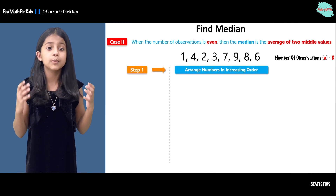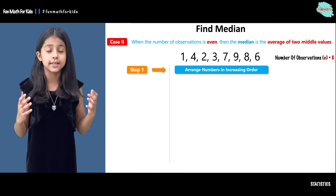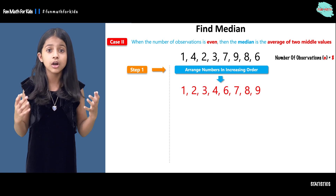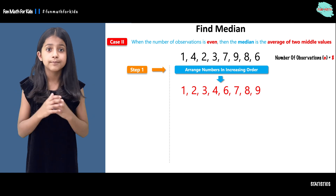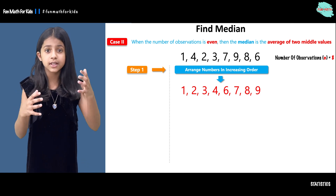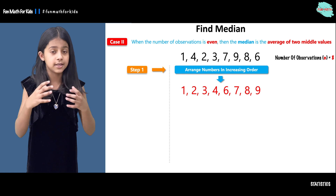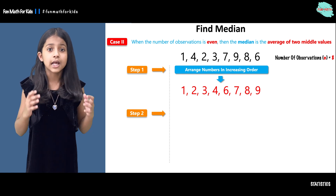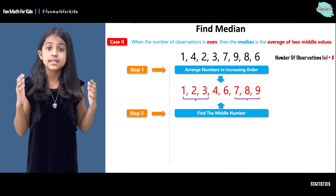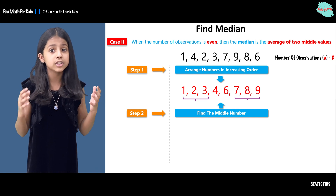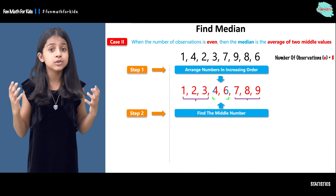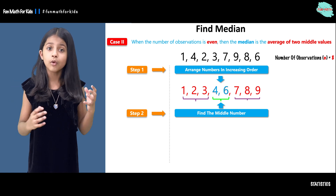In step one, you will arrange the numbers in increasing order. If you arrange them in increasing order, you will get this order: one, two, three, four, six, seven, eight, and nine. In step two, you will find the middle numbers. Since eight is an even number, there are going to be two middle values. The two middle values are four and six.